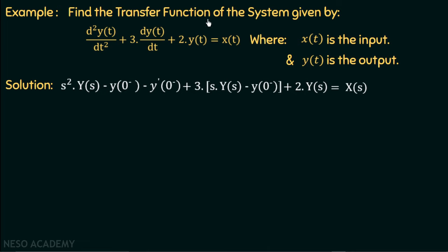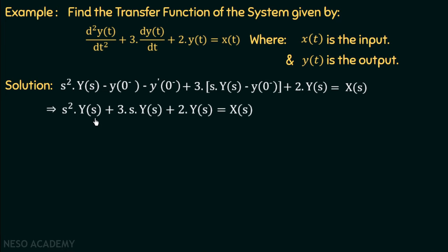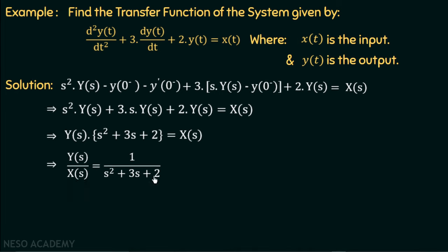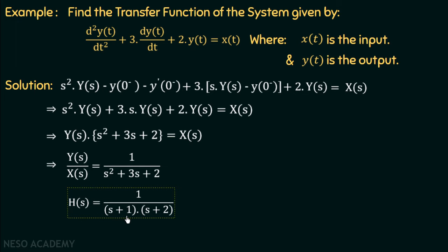Now we need to define the transfer function. Remember, to define the transfer function, the initial conditions must be equal to zero, so the initial condition terms in this equation must be zero. Setting those terms to zero, we get: s²Y(s) + 3sY(s) + 2Y(s) = X(s). Taking Y(s) as common: Y(s)(s² + 3s + 2) = X(s). Taking the ratio Y(s)/X(s), we get H(s) = 1 / (s² + 3s + 2). Factorizing, this is 1 / ((s+1)(s+2)). So the transfer function of this system is H(s) = 1 / ((s+1)(s+2)), and in this way we have calculated the transfer function.